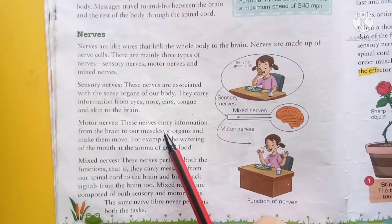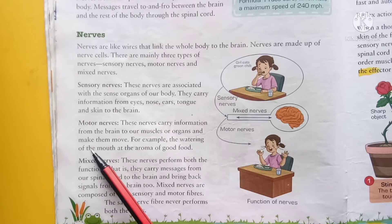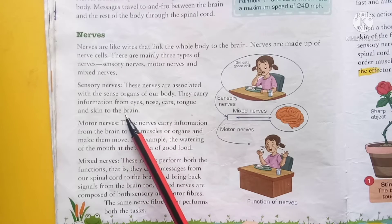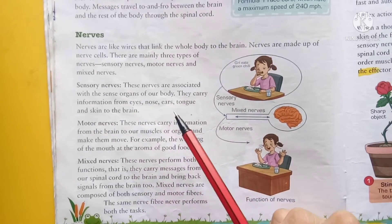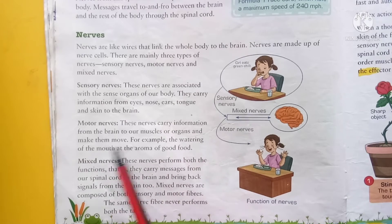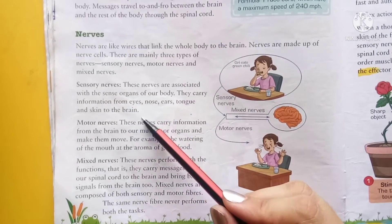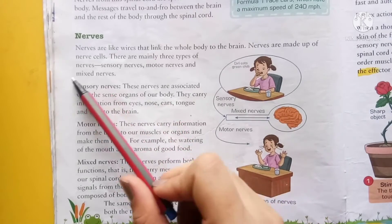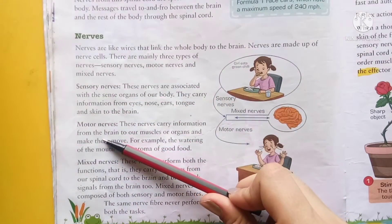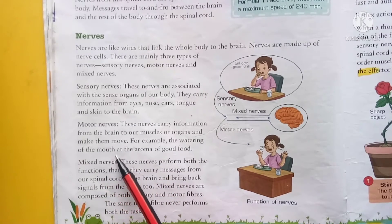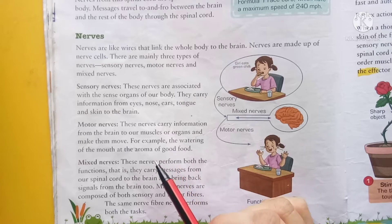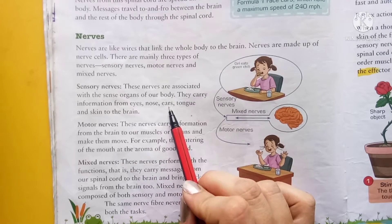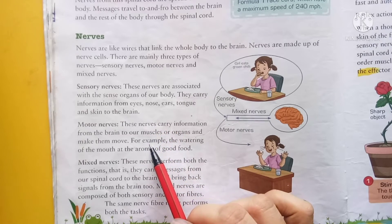Next is motor nerves. These nerves carry information from the brain toward muscles or organs and make them move. Motor nerves brain से information हमारे muscles और organs तक पहुंचाती है — sensory nerves से opposite. For example, the watering of the mouth at the aroma of good food. जैसे खाना खाया, उसका taste brain तक पहुंचा, और motor nerves के through brain ने बताया कि यह खाना बहुत tasty था.